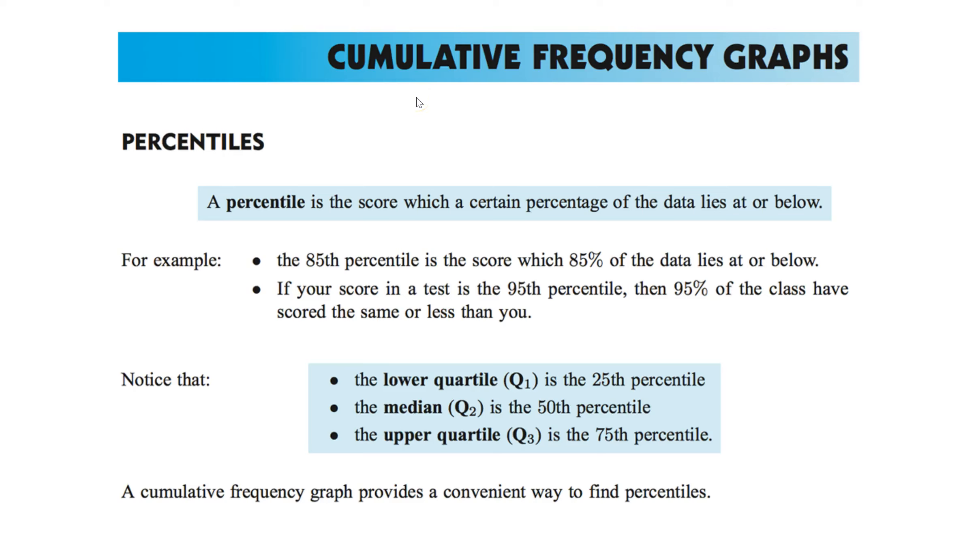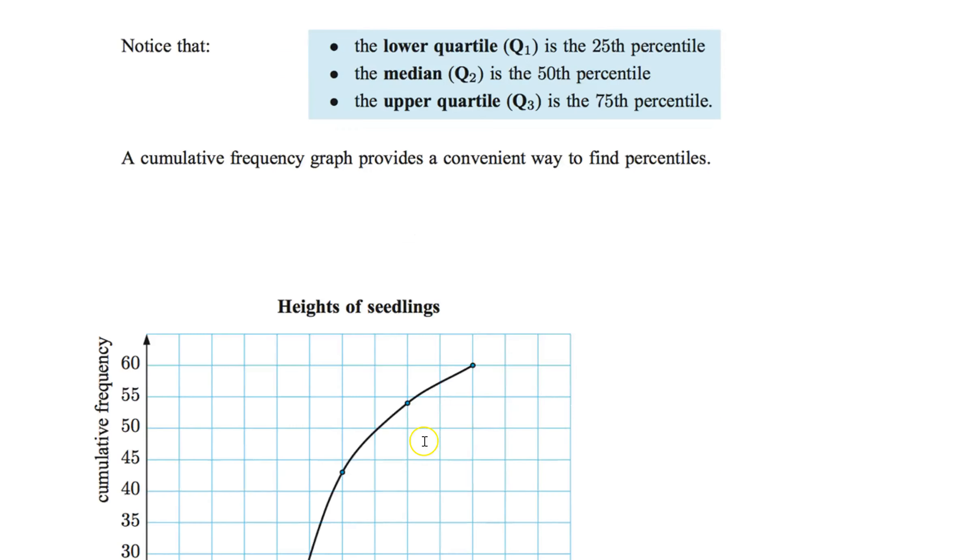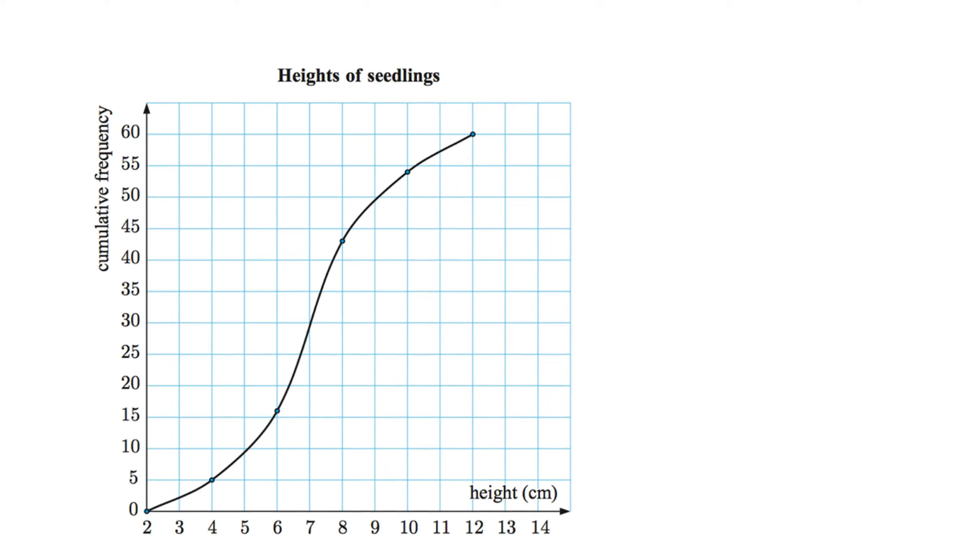Cumulative frequency graphs. Now this should be the second video you're watching on cumulative frequency graphs. The first one was about how to draw it from data. Now we're going to talk about how to read it from a graph. In cumulative frequency graphs, it's all about how to easily find percentiles, the lower quartile, the median, the upper quartile, any percentile you want.